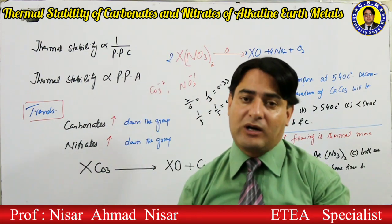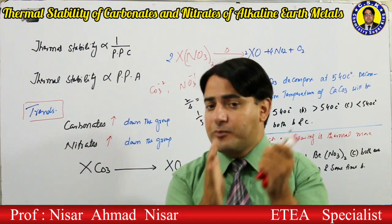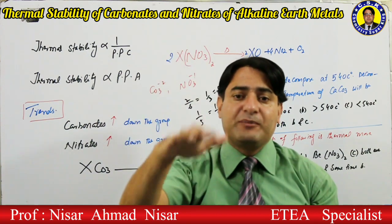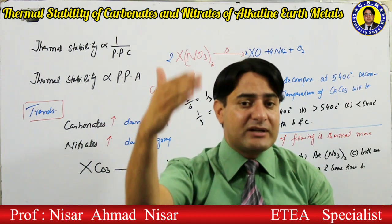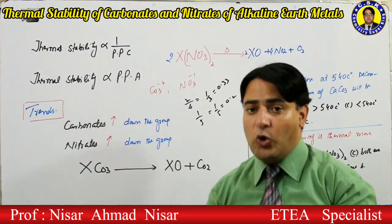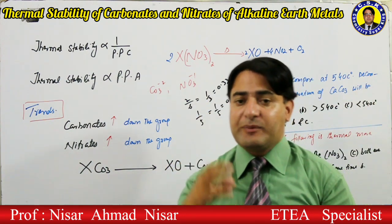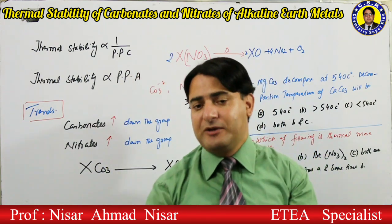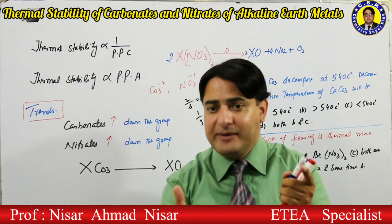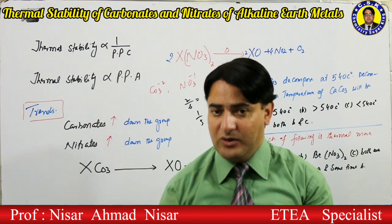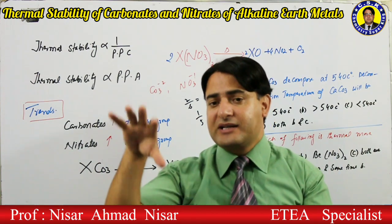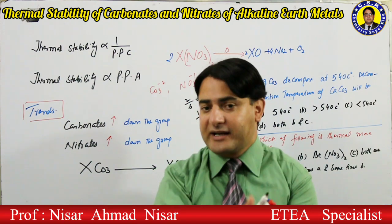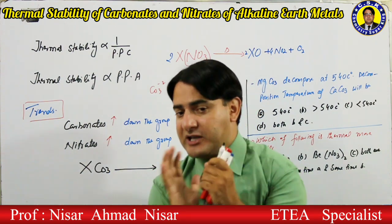If I have beryllium nitrate and beryllium carbonate, the thermal stability will be less stable because the polarizing power of beryllium is greater. Remember this first point: if the material is one element, both the nitrate and carbonate will follow the same trend. Carbonate will also be more stable than nitrate, and bicarbonate will be less stable.